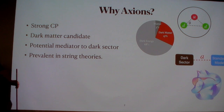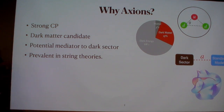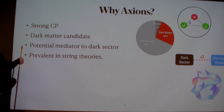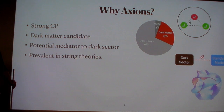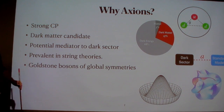Furthermore, axions are prevalent in string theories. String theory is a theory of ten dimensions; we live in three plus one, so six dimensions must be compactified. The way these compactified dimensions interact with higher dimensional gauge fields produces axions as zero modes in the three plus one dimensional theory. Additionally, any global symmetries which are spontaneously broken within beyond-the-standard-model physics will also produce axions. This shows up quite often in flavor symmetries, for example as flavons.